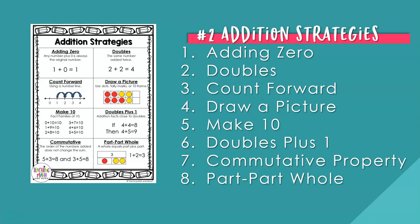Strategy three: counting forward — using a number line to count forward by ones. Strategy four: drawing a picture — students can draw a picture with dots, tally marks, or a 10 frame. Strategy five: make 10 — students can use addition fact families of 10 to quickly find sums of 10. Strategy six: doubles plus one — students use their prior knowledge of doubles; if a close double is four plus four equals eight, then four plus five is easily solvable because that is nine.